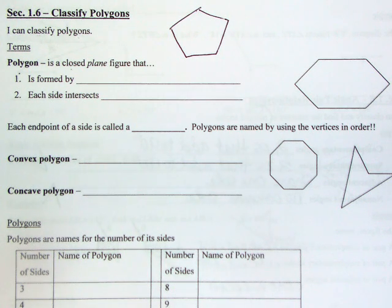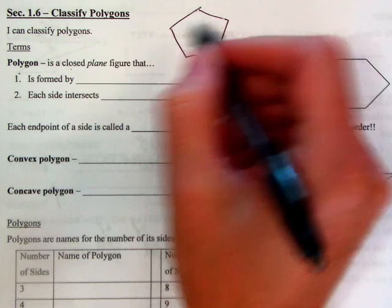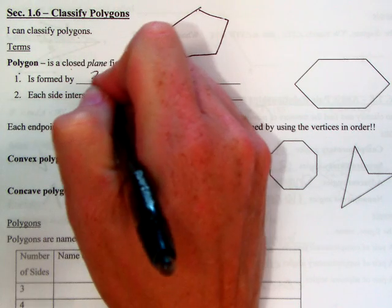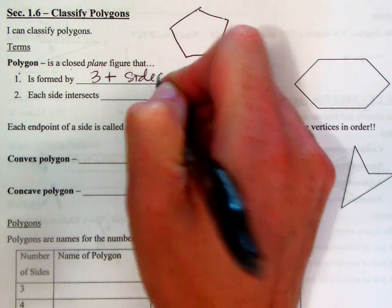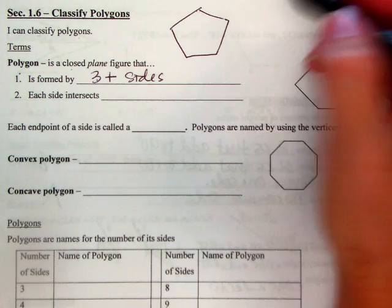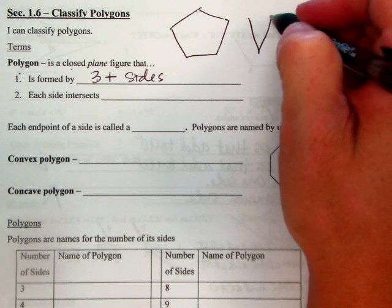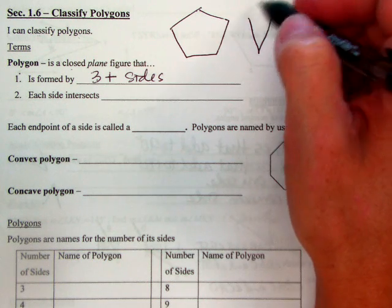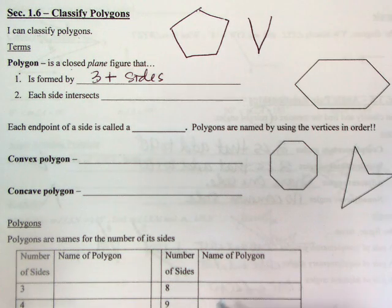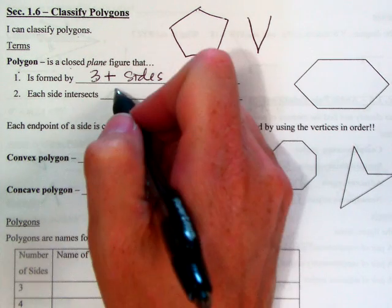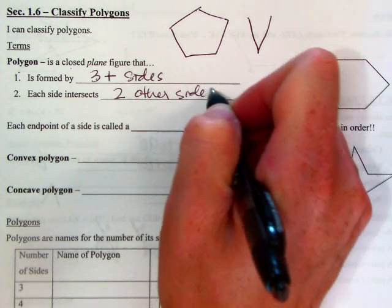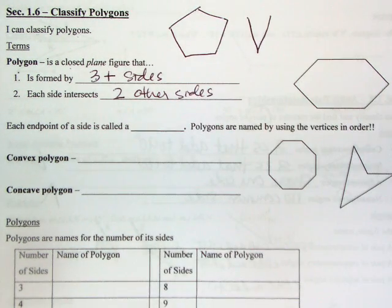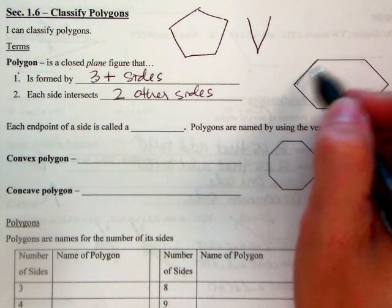When you are talking about a polygon, it's a closed plane figure formed by three or more sides. You can't have anything less than three because if you had two you wouldn't be able to close it off and have it be a shape. Each side intersects two other sides, so every side that you have intersects two others.